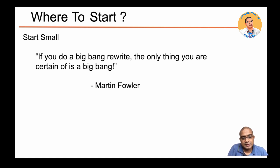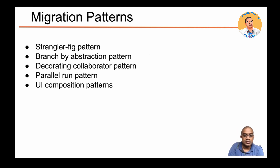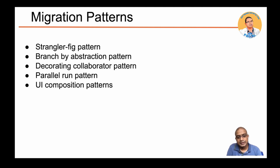As Martin Fowler famously said: if you try to do a big bang rewrite, the only thing you're certain of is the big bang — it could collapse and go everywhere. You should start small. In the next video, we'll go through migration patterns and explain how to dissect one part of your monolith and apply one of these design or migration patterns to move into microservices. That concludes the first part of this video.